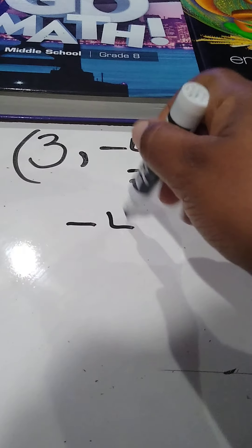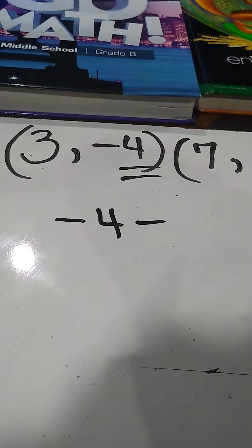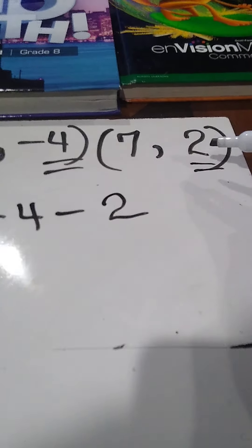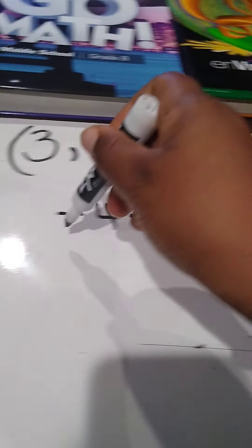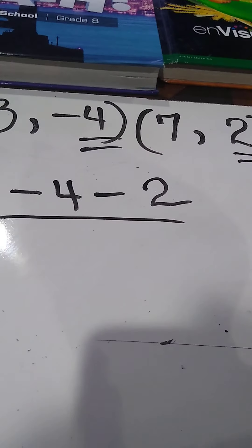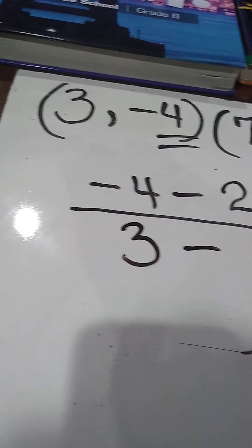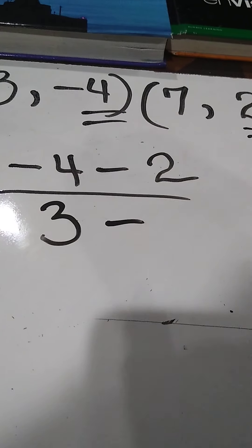So I'm going to do -4 take away 2. It's a positive 2, so I'm just subtracting 2. All over positive 3 take away 7.